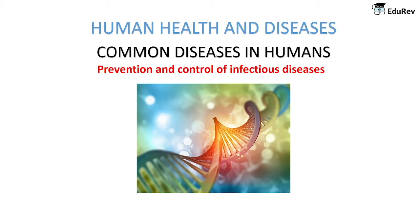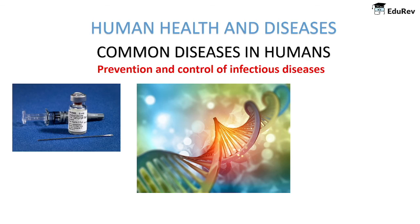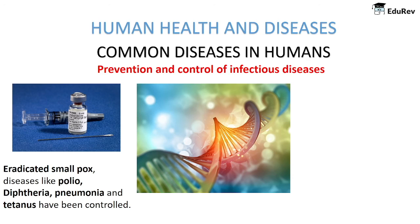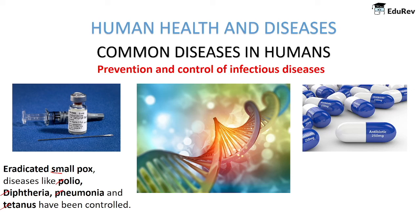Advancements in biological science have helped us deal with many infectious diseases. Vaccines and immunization programs have enabled us to completely eradicate smallpox, and diseases like polio, diphtheria, pneumonia, and tetanus have been largely controlled. Biotechnology is providing newer and safer vaccines, and the discovery of antibiotics and drugs has also enabled us to fight various infectious diseases.